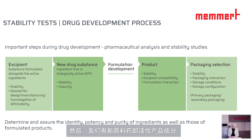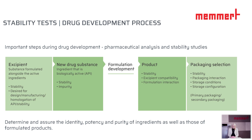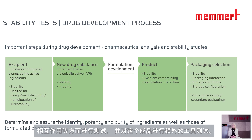Then we have the new drug substance, which is the active product ingredient. This has to be tested for stability and impurity. Then we get the formulation development, which is the composition of the drug substance and the excipients. This has also to be tested in regard to stability, excipient compatibility, formulation interaction, and additionally the testing of the finished product.